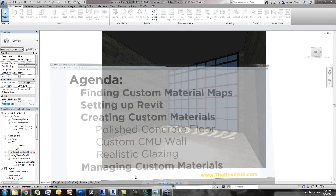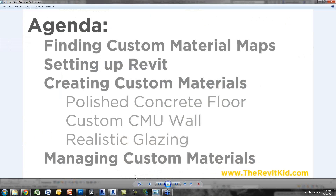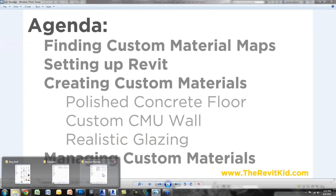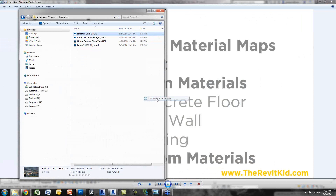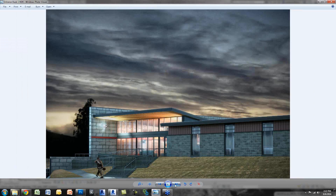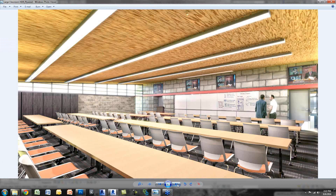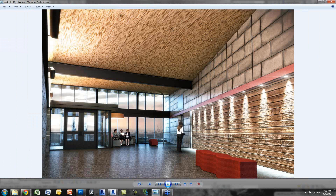Let's check our agenda. We've covered finding custom material maps — CG Textures and Google — and setting up Revit to point to the correct location across multiple computers. We've created the polished concrete floor using a map with a semi-gloss varnish from the wood floor asset. And we covered custom CMU walls with a map and bump map. Looking at the example images, you can see the CMU walls, the plywood — all of these are simply a map and a bump map.